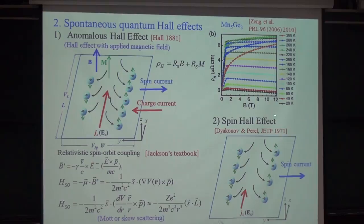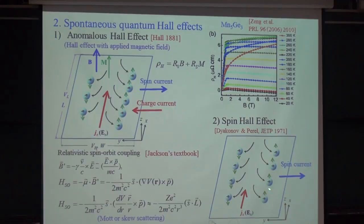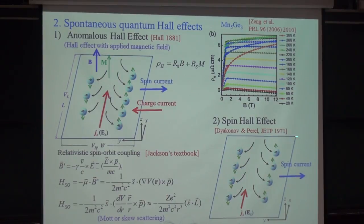In 1971, two Soviet scientists, Dyakonov and Perel, realized that instead of ferromagnetic material, we go back to the non-magnetic case. Here we have equal numbers of spin-up and spin-down electrons. Then we have no charge current and no Hall voltage. But you can see that electrons with spin up go one way, electrons with spin down go the other way. Effectively, we see a so-called pure spin current — this is now known as the spin Hall effect.